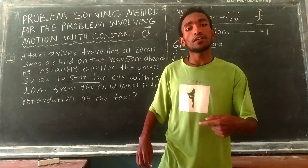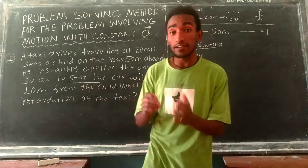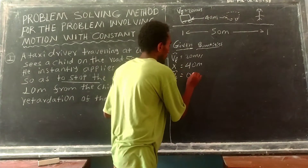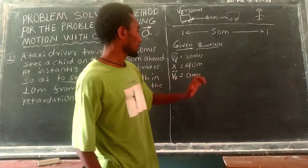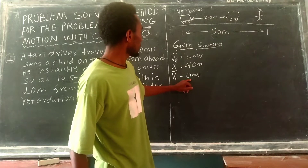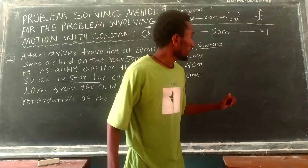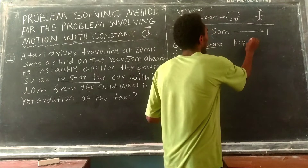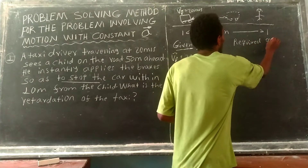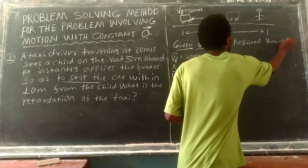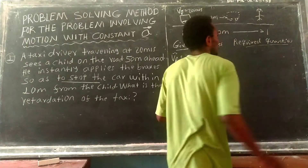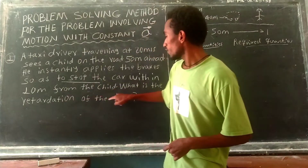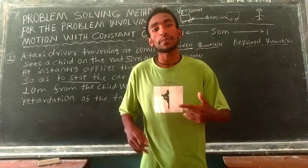The final velocity is 0, since the car must stop. The required quantity is the retardation, or deceleration — that is, the acceleration of the taxi as it slows down.